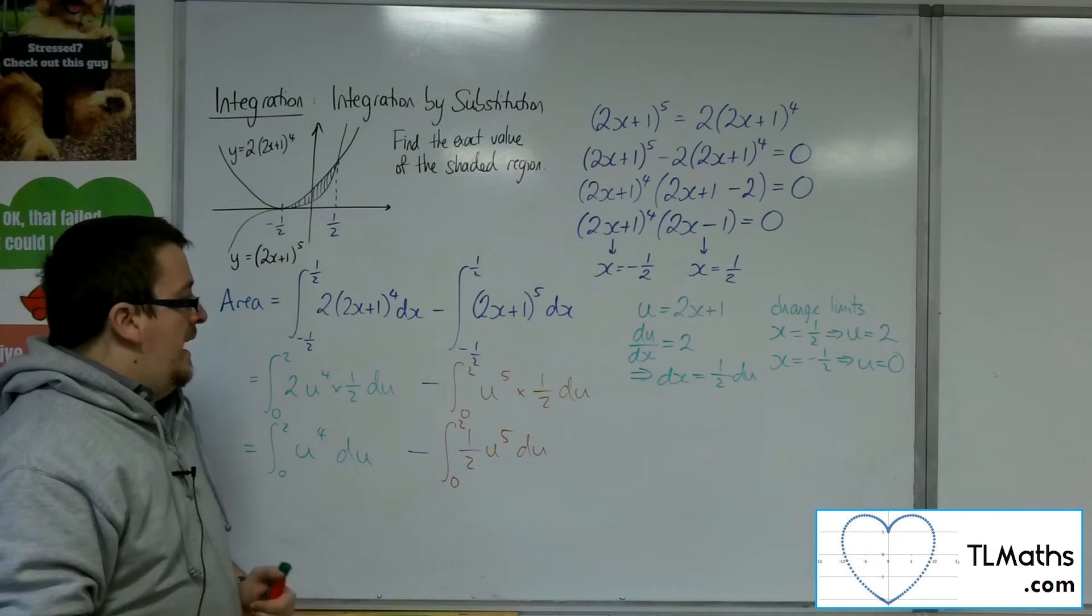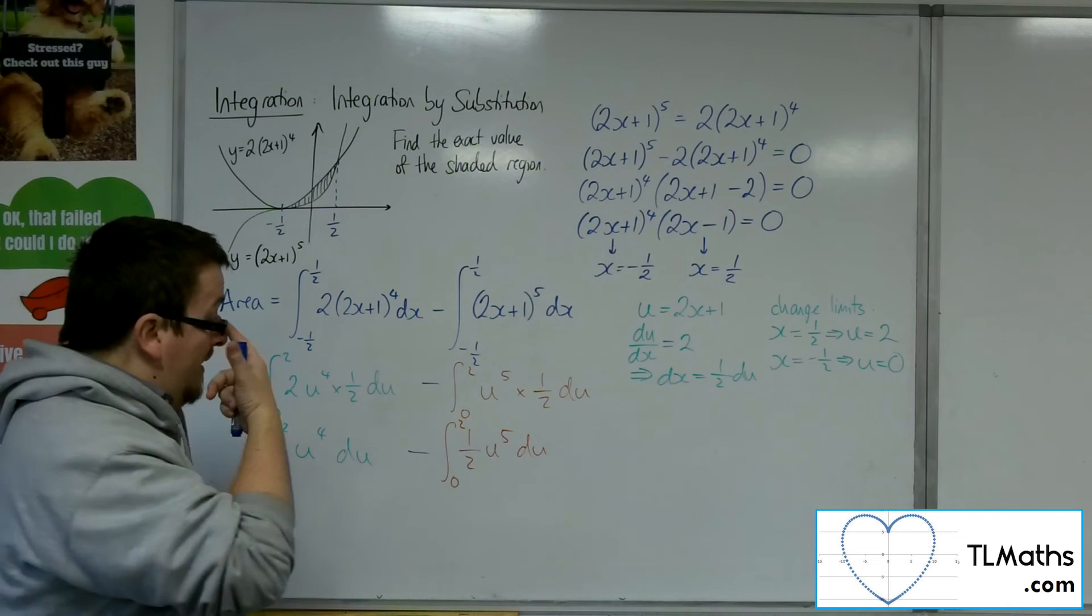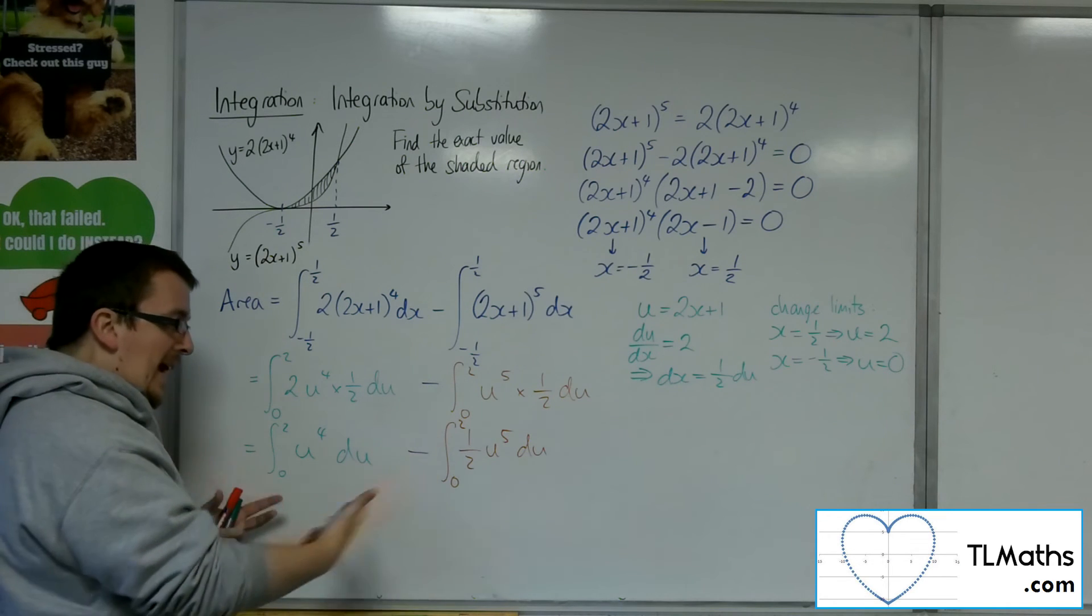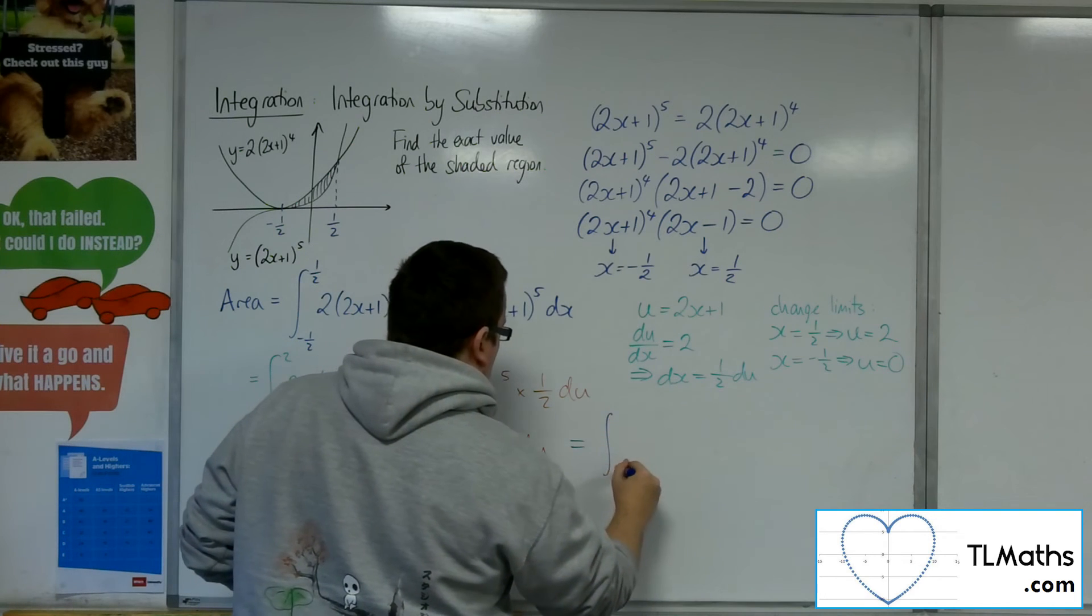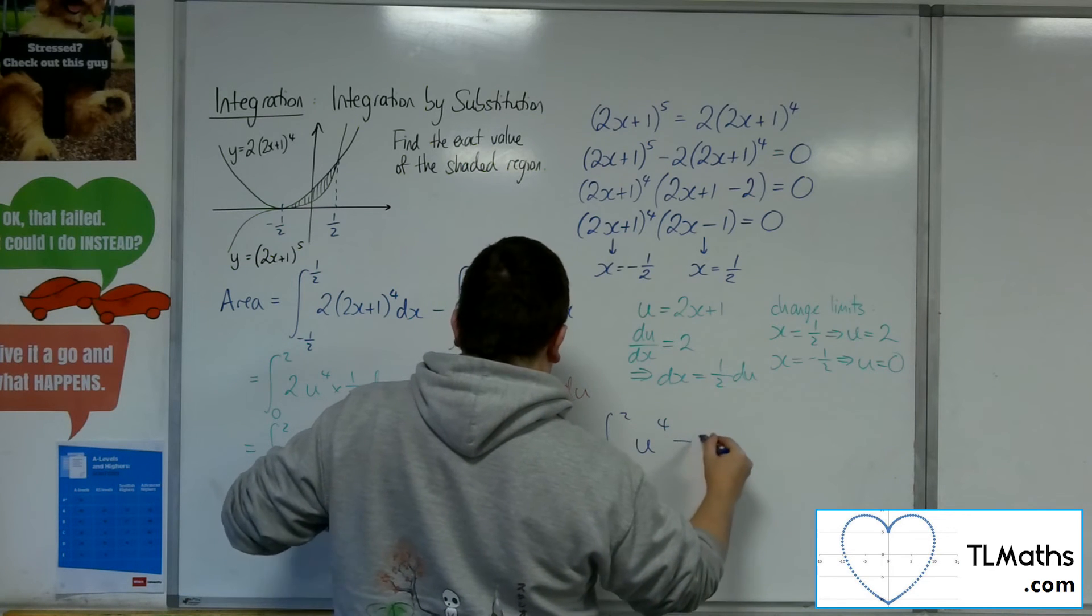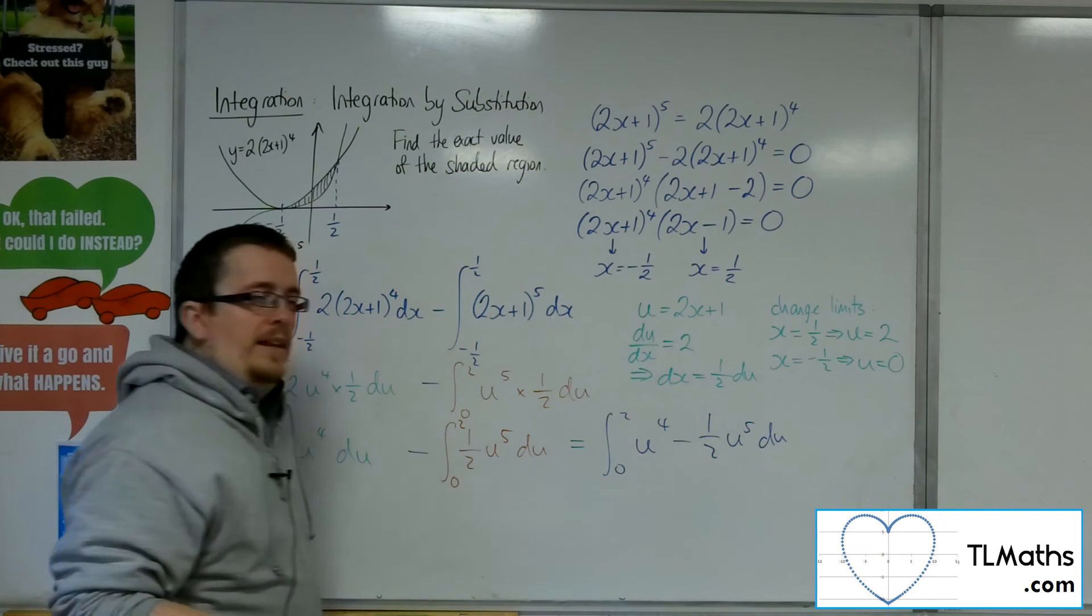Now, what you can do, and I could have done at that stage as well, is that when you've got two integrals with the same limits, you can combine them. So I can write that as the integral between 0 and 2 of u to the 4 take away 1 half u to the 5 du. So it eases the notation.